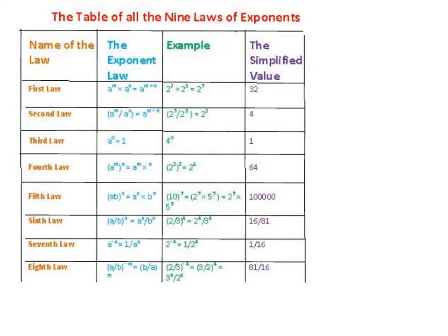When you're dividing, the rule says that you subtract the exponents if they have the same base. Any number that's raised to the zero power is going to equal 1 every single time. So it could be 1,322,000 raised to the zero power — that simplifies to 1.